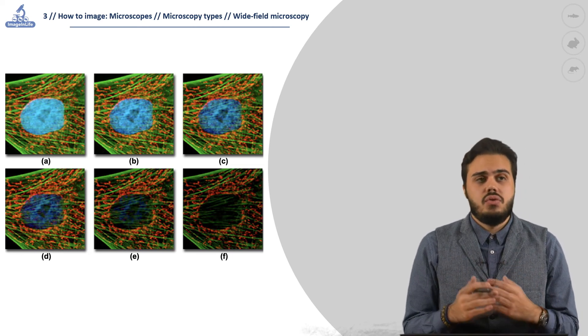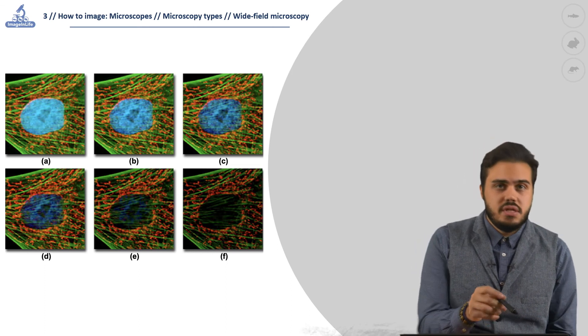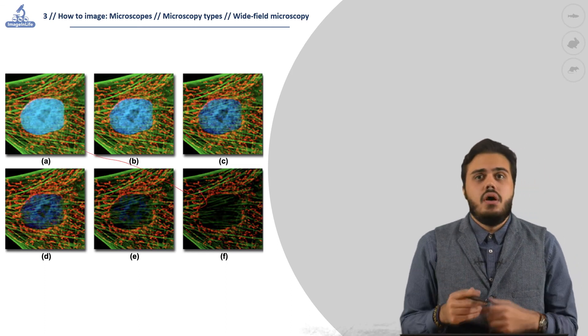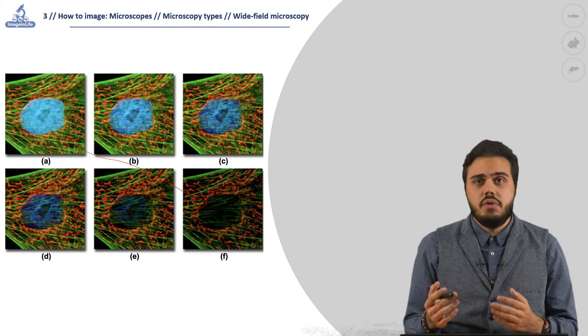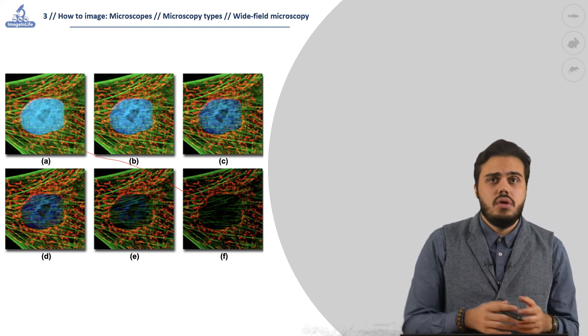When an image starts to fade, the emission intensity gradually decreases. To fix this, the only way is to plan carefully each part of the experiment, from the fluorescent label to the image acquisition.